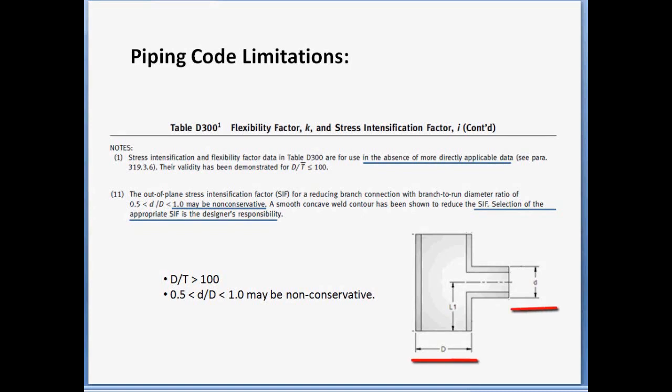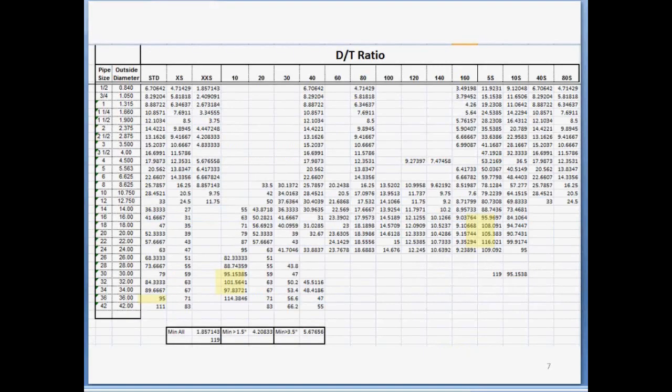Note 11 states that when the D over d ratio is between 0.5 and 1, the I-factors may be non-conservative for pads, unreinforced fabricated T's and OLEDs, and that the selection of the appropriate SIF is the designer's responsibility. Just for information, here are the D over T ratios for most schedules of pipe up to 42 inches. You'll note that there are not many combinations of diameter and wall thickness where the D over T ratio is greater than 100. So the D over T limit in B31-3 Appendix D is not really a problem in most cases.